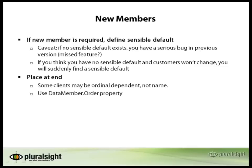To do this on a data contract, you use the data member order property. This informs WCF and the serialization infrastructure where something should appear when it's being serialized out. This is true for both JSON and XML. On reading in, the order is used to figure out whether something is in the right position. Order is ignored on JSON but respected on XML.